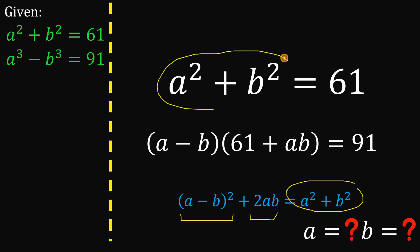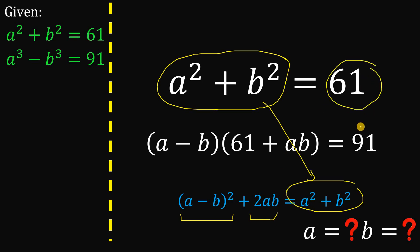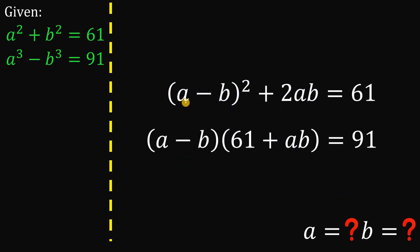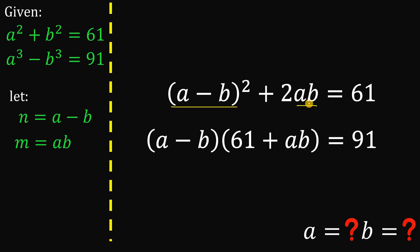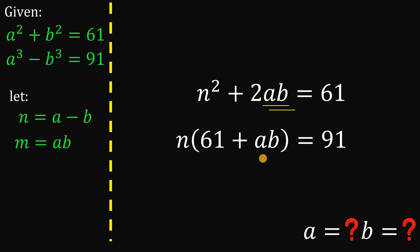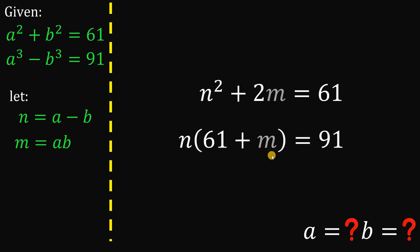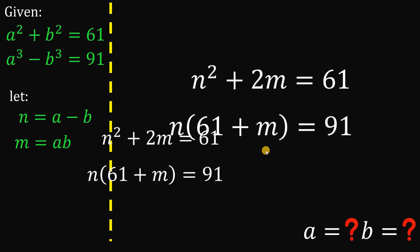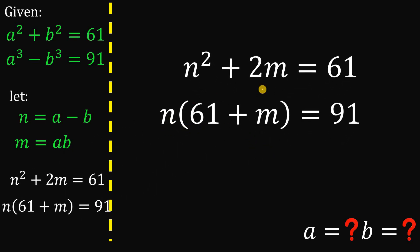We have a squared plus b squared on both sides, and since that equals 61, we can write: a minus b squared plus 2ab equals 61. Now let's substitute: let n equal a minus b and m equal ab. Our first equation becomes n squared plus 2m equals 61, and all instances of a minus b become n and a times b become m.